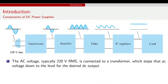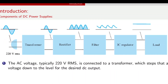The components of a DC power supply — regulated power supply (RPS) — are: a step-down transformer which converts 220 volts RMS to 12 volts or 20 volts, a rectifier, a filter circuit, and a regulator circuit. The AC voltage, typically 220 volts RMS, is connected to a transformer which steps down the voltage to the desired DC output level.